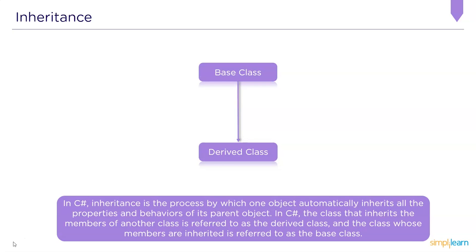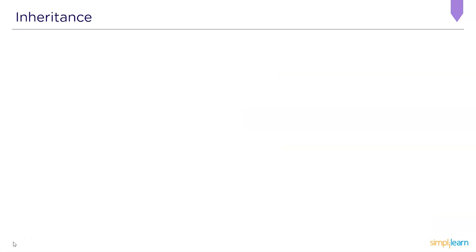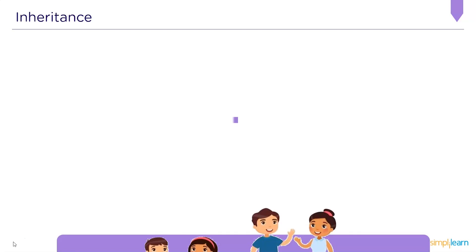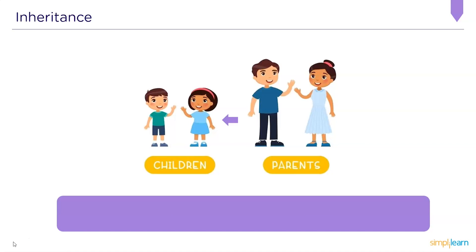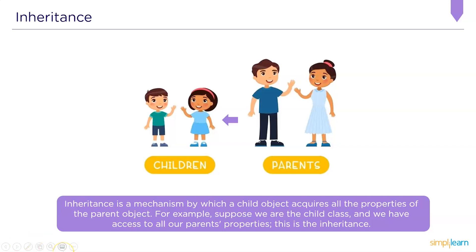Here is a pictorial representation of inheritance showing a child class inheriting properties from a parent class, also known as a derived class inheriting from a base class. Inheritance is a mechanism by which a child object acquires all the properties of the parent class — just as children inherit the properties and behaviors of their parents.